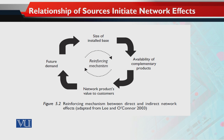Besides direct effects, there are also indirect effects. Indirect effects involve complementary and auxiliary products — those products you continuously need while using the network product and adopting the new technology. The key question is: are they easily available? Are updates, software, spare parts, and related products easily accessible? And are their prices reasonable and low enough that customers can easily purchase them?